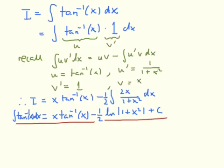Let's check that we've calculated this last integral correctly. If I differentiate the logarithm of 1 plus x squared, I get 1 over 1 plus x squared multiplied by the derivative of the argument, which is 2x. So I get 2x over 1 plus x squared, which is exactly what we wanted. We have calculated this integral correctly, and it's always sensible to check our work.